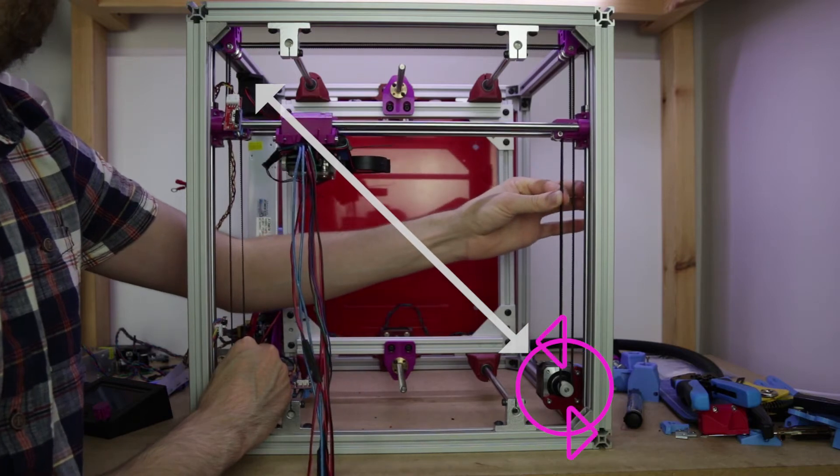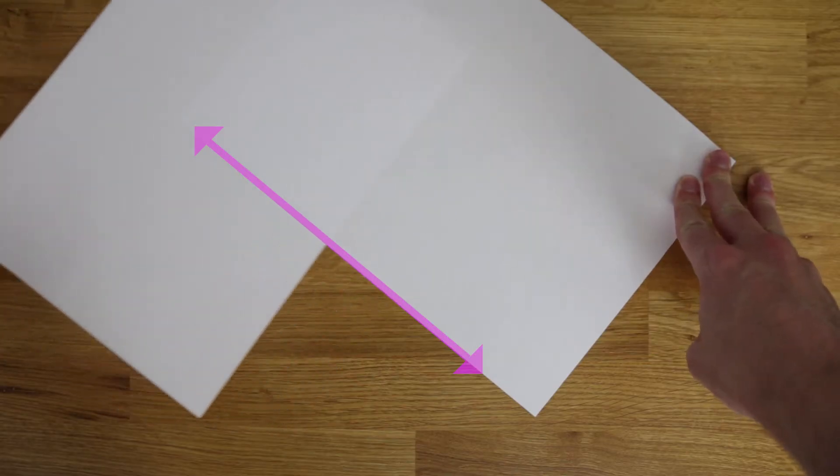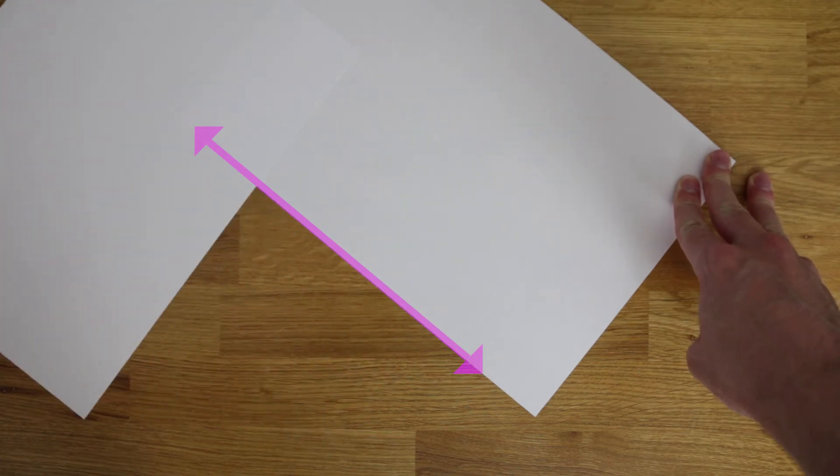So what about that other piece of paper? Does it still work? Well, let's try. Move the left-hand piece of paper and compare it against the CoreXY printer.